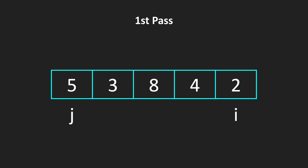So what we do, we are maintaining two variables: j, which is pointing to the beginning of the array, and i, which is pointing to the last index of our array. So what we do in our first pass, we go over our array until our j is less than our i, and we are comparing two adjacent elements.